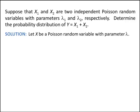Suppose that x1 and x2 are two independent Poisson random variables — and that word 'independent' is very important in this example. The Poisson random variables have parameters lambda 1 and lambda 2. We want to determine the probability distribution of y, which is the sum of x1 and x2, and again, these two random variables are independent.